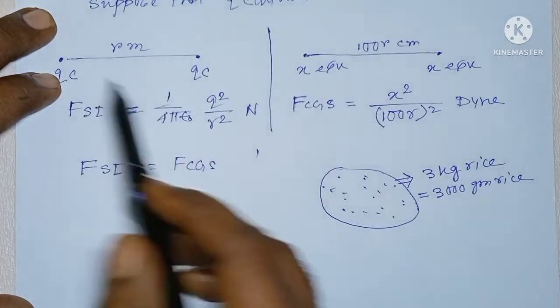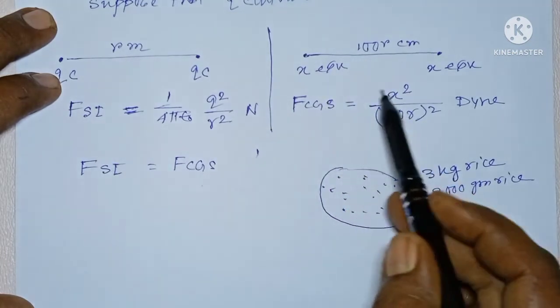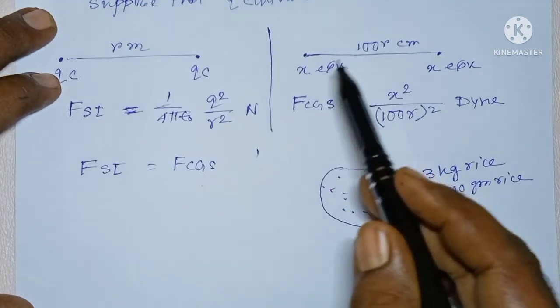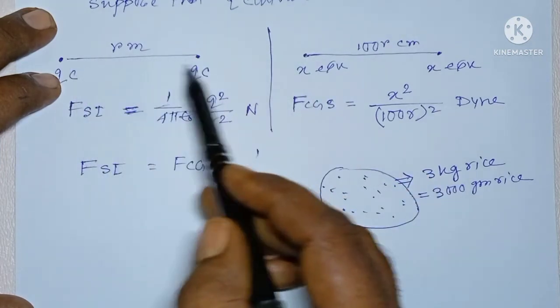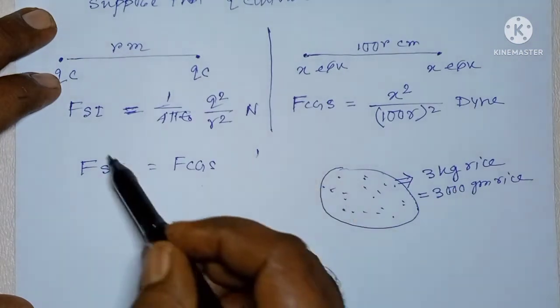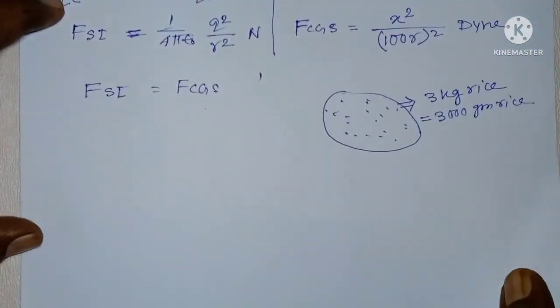In this section, we have found the force in SI unit system. Whereas, in this section, we have found the force between these two same point charges separated by same distance in CGS unit system. So, these two forces are equal.